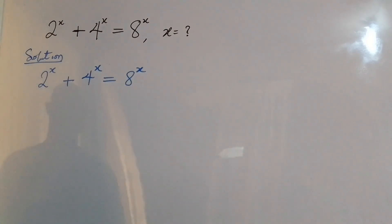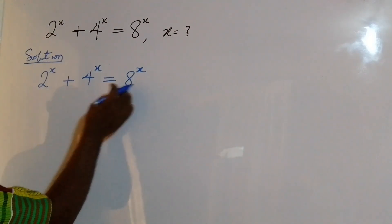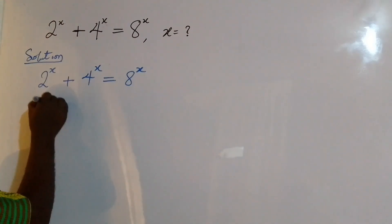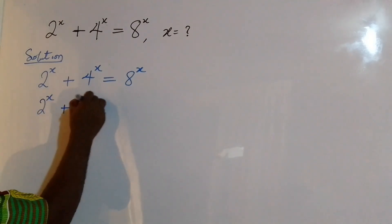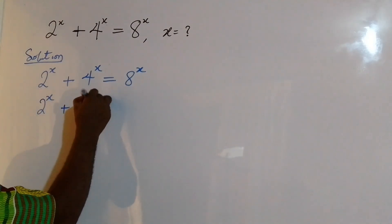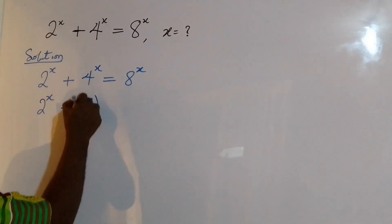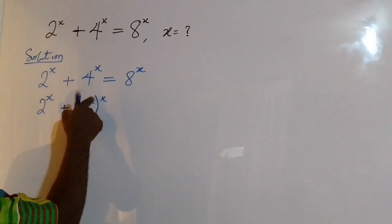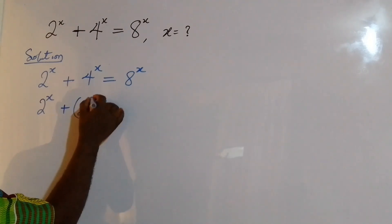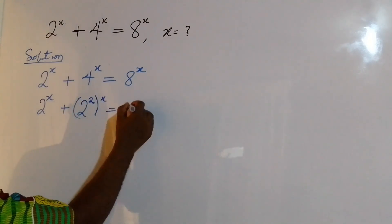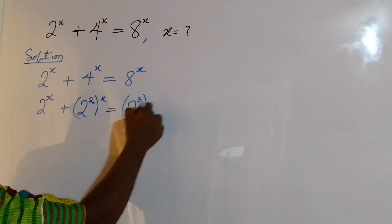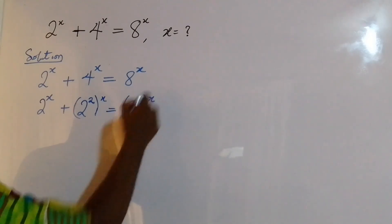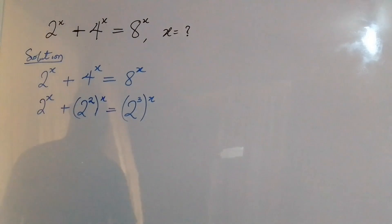That means I'm going to write both 4 and 8 in base 2. So here I have 2 to the power of x plus 2 to the power of 2, raised to the power of x, equal to 2 to the power of 3, raised to the power of x.